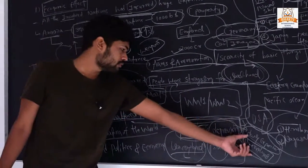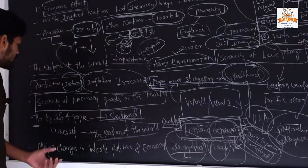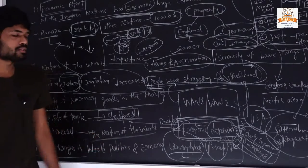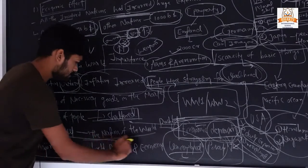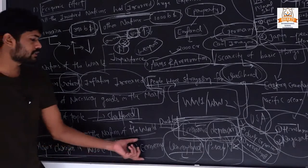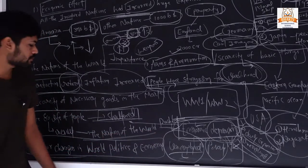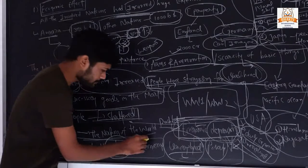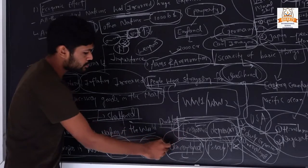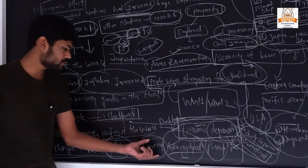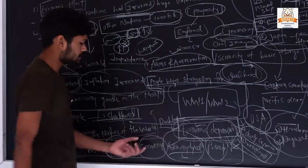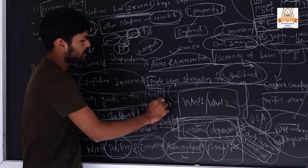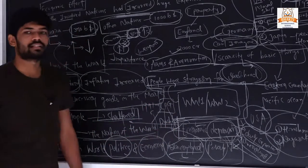This is the indirect concept related to economic depression. Last, major changes can be seen in world politics and the economy. Different countries adopted different political policies, and to come out from economic depression they also adopted different economic policies. Like India adopted the LPG policy — liberalization, privatization, globalization — in 1991.